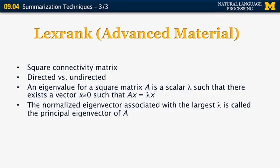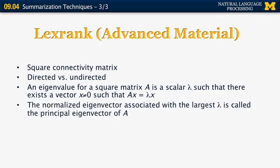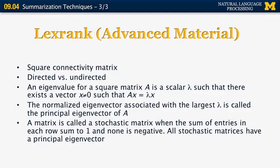The normalized eigenvector associated with the largest lambda is called the principal eigenvector of A. And a matrix is called a stochastic matrix where the sum of entries in each row sum to one and none of them is negative. So they all form some probability distribution. And there is a theorem that says that all stochastic matrices have a principal eigenvector.